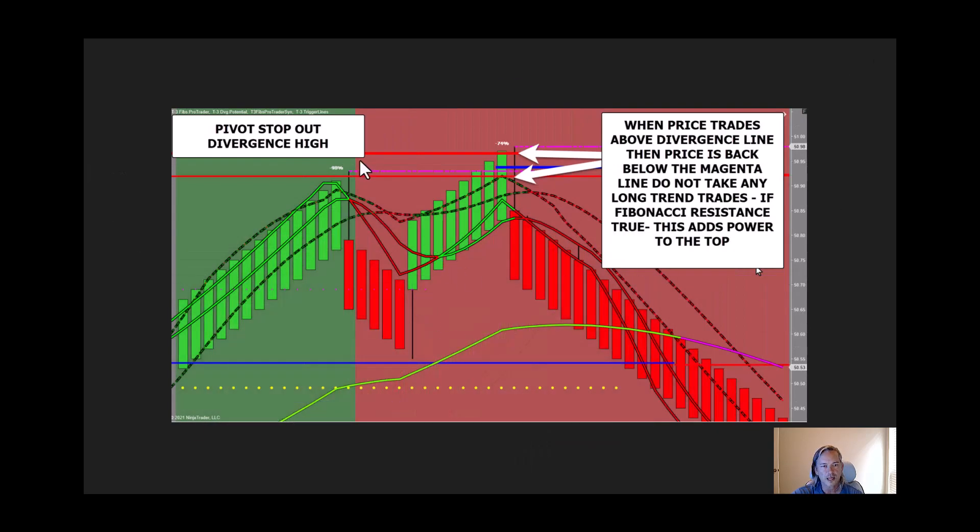Same is true at a high. If price trades above and back below that divergence high line, now we have a pivot stopout of a divergence high. No more long trades into the area, and it becomes a little more powerful when Fibonacci resistance or support are true right there at the pivot stopout.